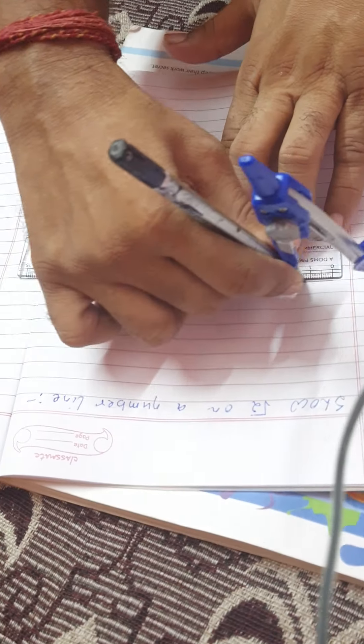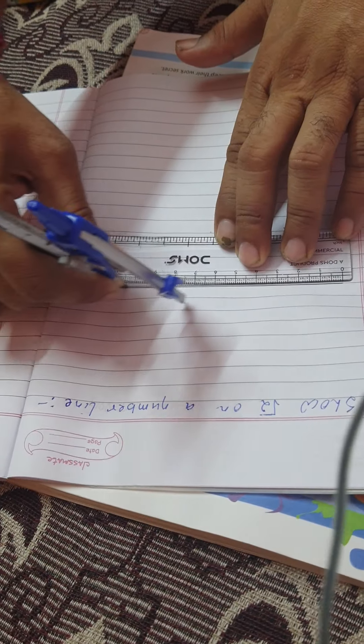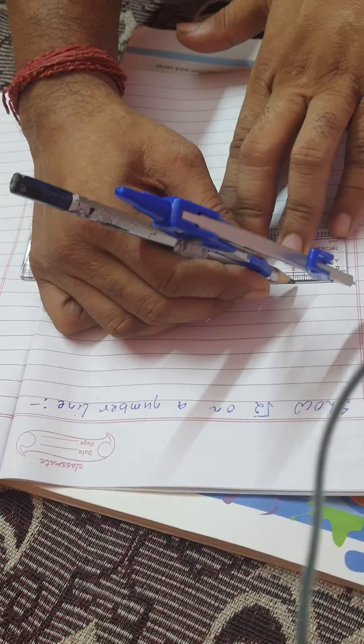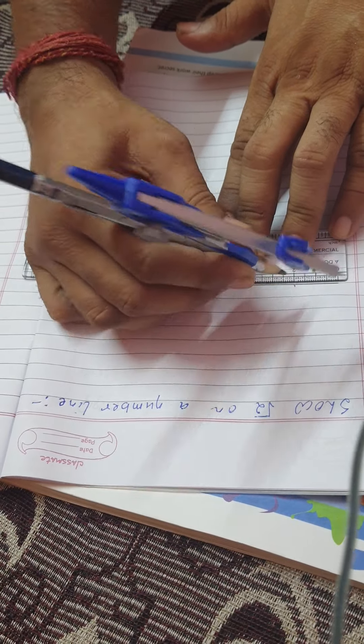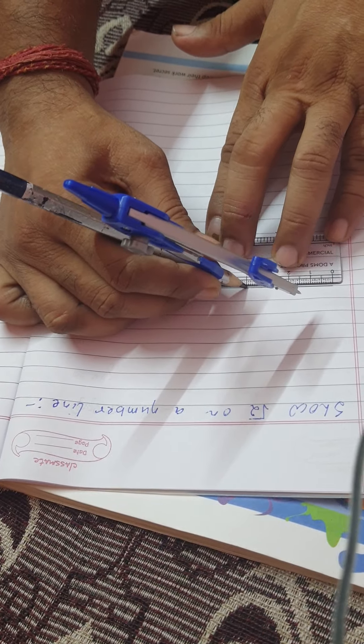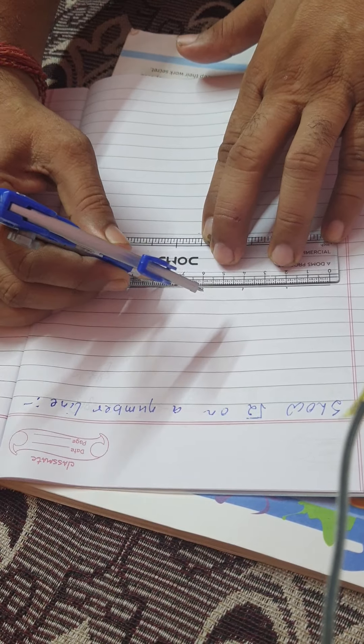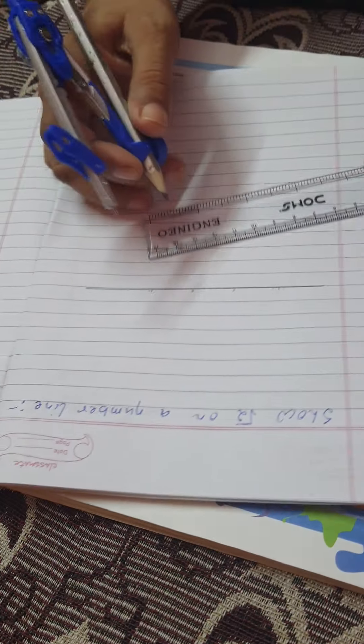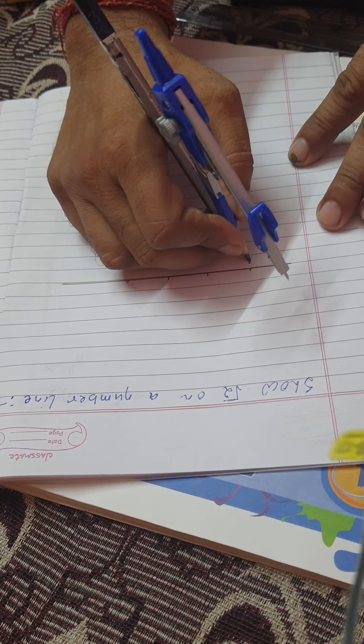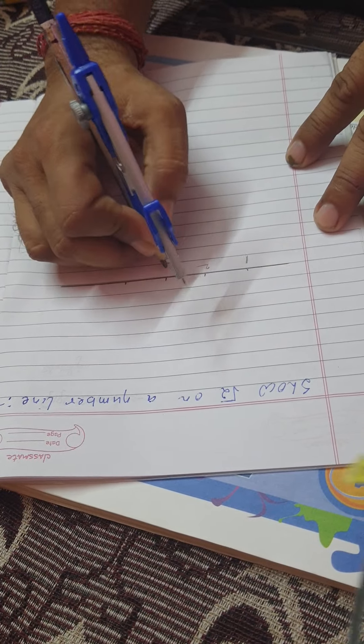Hello students, in this video we are going to learn how to make root 2 on a number line. First, we will take these two intervals as one, these two intervals as another one, and so on. This can be written as one, this as two, this as three, and this as four.